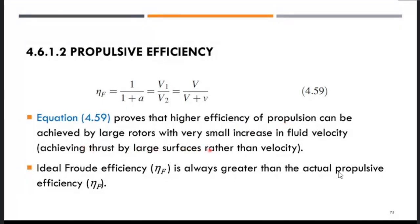Achieving thrust via a large surface rather than high velocity increase: the Froude efficiency ζf is always greater than the actual propulsive efficiency ζp. The ζf is the upper limit — the maximum the propeller can achieve — and is called the Froude efficiency.